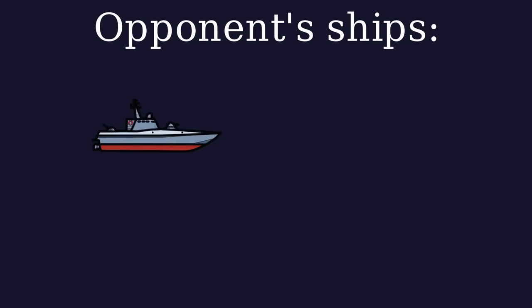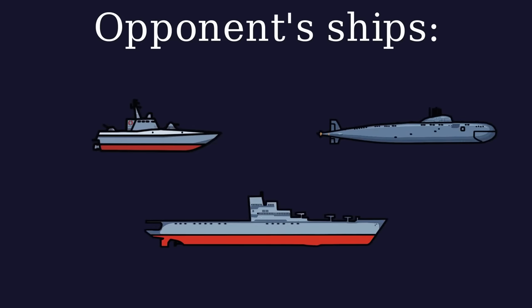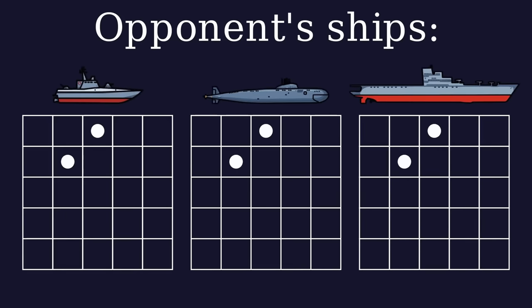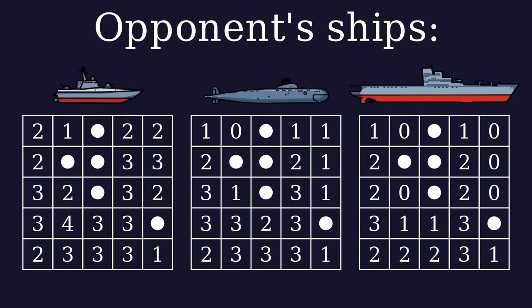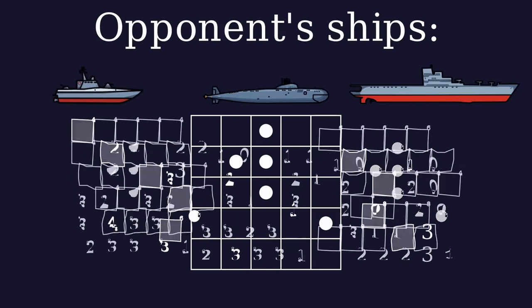If the opponent has more ships, we calculate the probability maps for each ship and add them up. For example, these are the probability maps for destroyer, submarine and carrier. After adding them, our overall probability map looks like this.